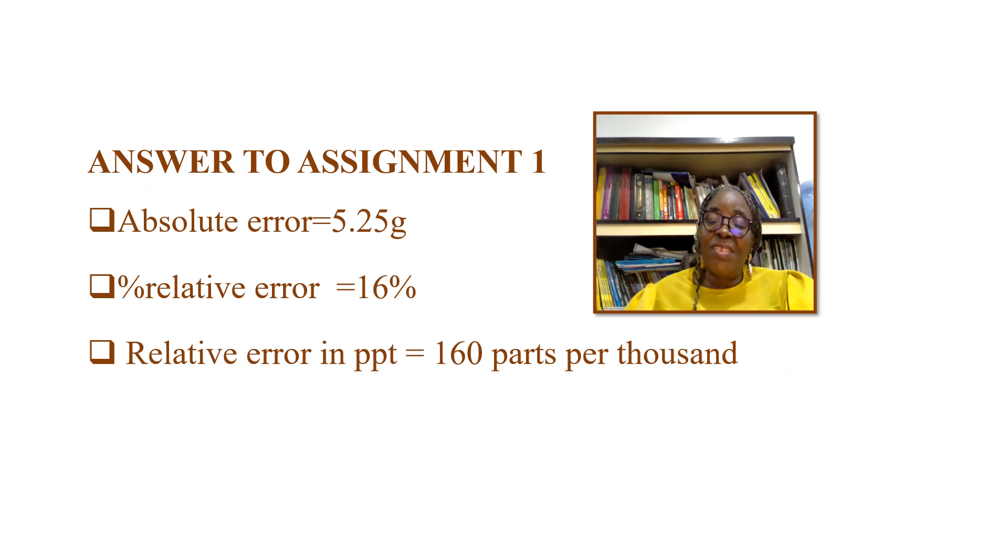In our previous lesson, we learned about absolute error and relative error and an assignment was given. The absolute error for that assignment was 5.25 grams and the percentage relative error was 16%, while the relative error in parts per thousand was 160 parts per thousand. If you didn't watch the last video, do well to go and watch it.